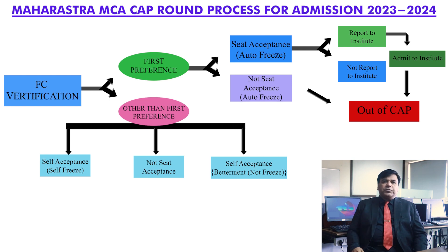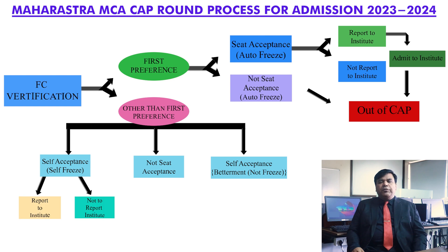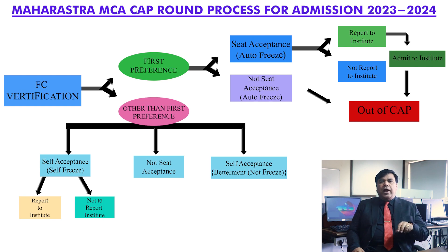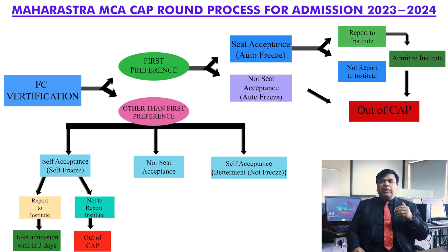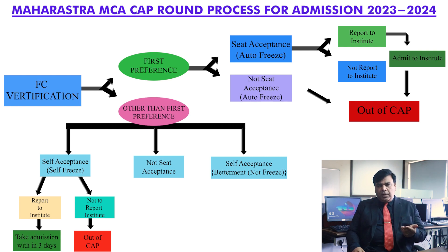In the first option, that is called seat acceptance, also known as self freeze — if you freeze the college, then you have to report to that institute and take admission to that particular institute. You can take the admission within two to three days. But if you are not reporting to that institute, then again you will be out of the CAP.